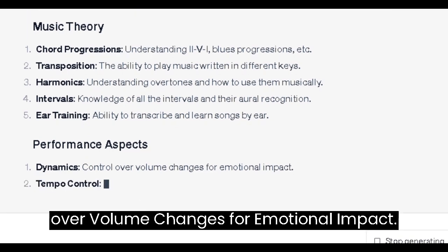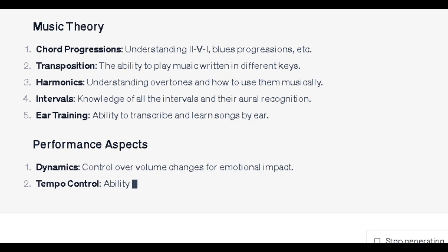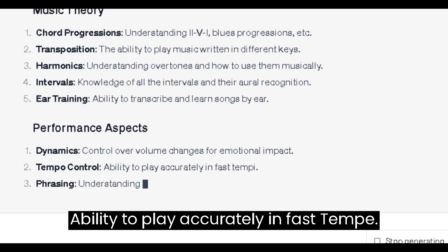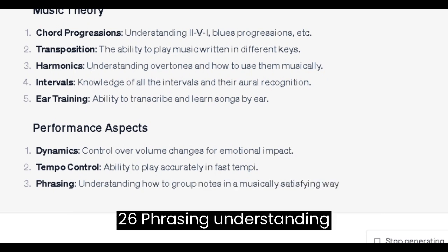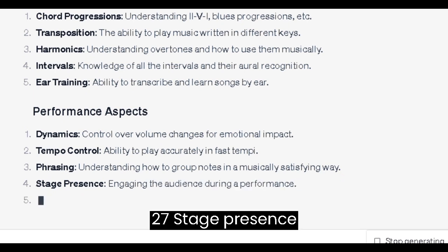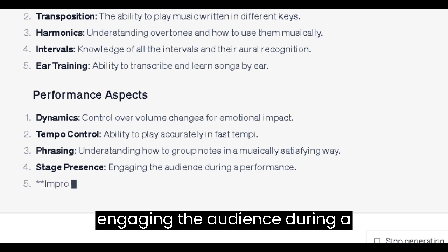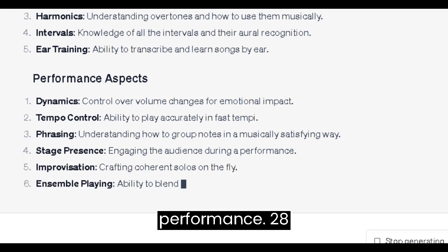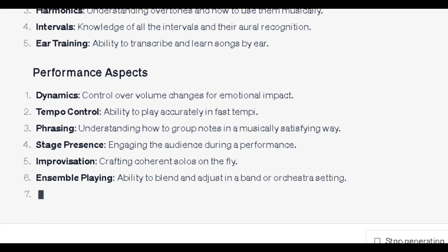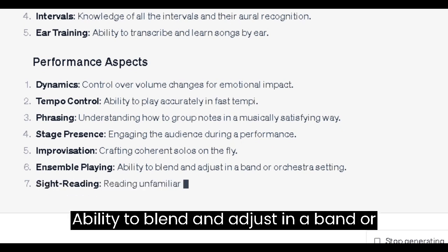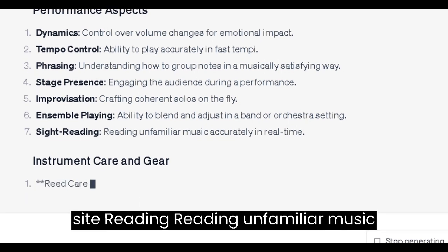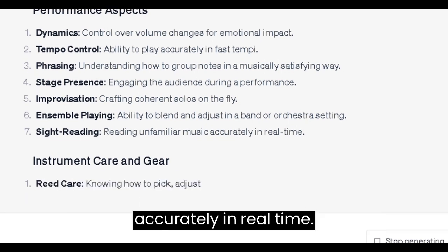Performance Aspects. 24. Dynamics: control over volume changes for emotional impact. 25. Tempo Control: ability to play accurately in fast tempi. 26. Phrasing: understanding how to group notes in a musically satisfying way. 27. Stage Presence: engaging the audience during a performance. 28. Improvisation: crafting coherent solos on the fly. 29. Ensemble Playing: ability to blend and adjust in a band or orchestra setting. 30. Sight Reading: reading unfamiliar music accurately in real time.